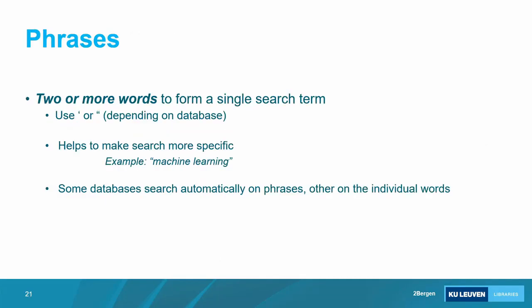First: phrases. Two or more words can be a single search term — like 'biocomposites' or 'biobased composites.' Your database won't necessarily know you want to keep them together unless you specify it. The basic idea is to use quotation marks — single or double, depending on the database — to specify that your keywords are actually a phrase. Some databases search automatically for phrases, but others don't. Remember: two or more words, quotation marks, makes it a phrase.